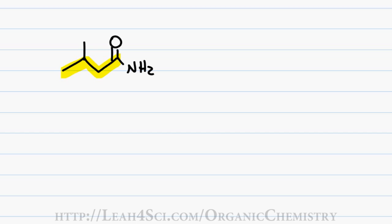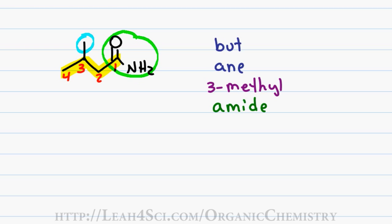We first identify and highlight the parent chain and number so that the amide gets your number one. Having four carbons gives you a first name of but and only single bonds gives you a last name of an. We have a one carbon substituent on number 3 which gives me the prefix 3-methyl and the carbonyl bound to nitrogen gives me the suffix amide. Drop the e in an for a final name of 3-methylbutanamide.